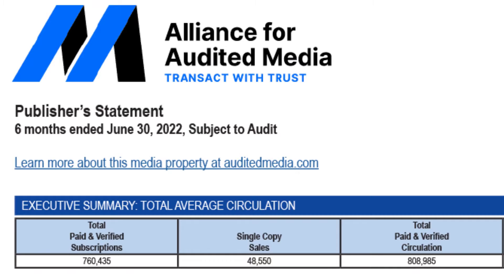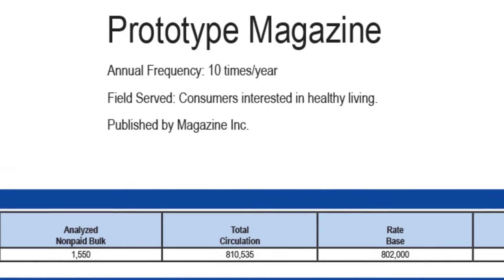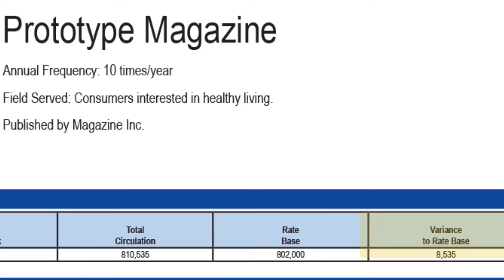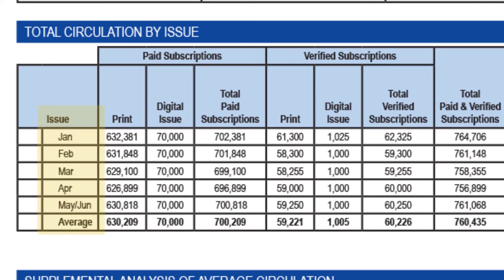The Executive Summary section provides a high-level overview of the magazine's circulation with data for each major reporting category, including paid and verified subscriptions, single copy sales, and the total of those two categories. Additional breakouts include analyzed non-paid bulk circulation, total circulation inclusive of analyzed non-paid circulation, average rate-based for the period, and variance to rate-based for the period.